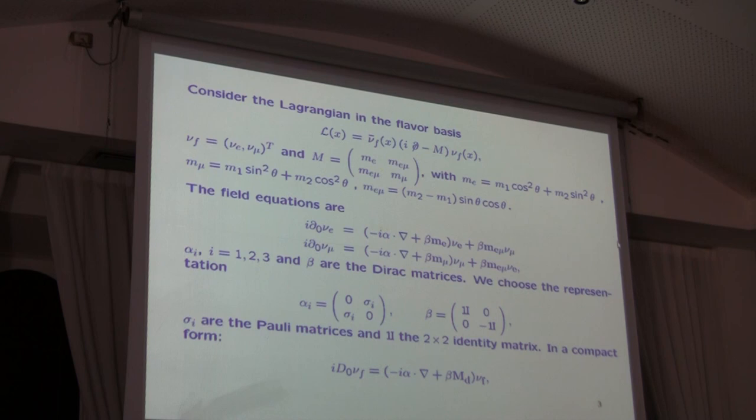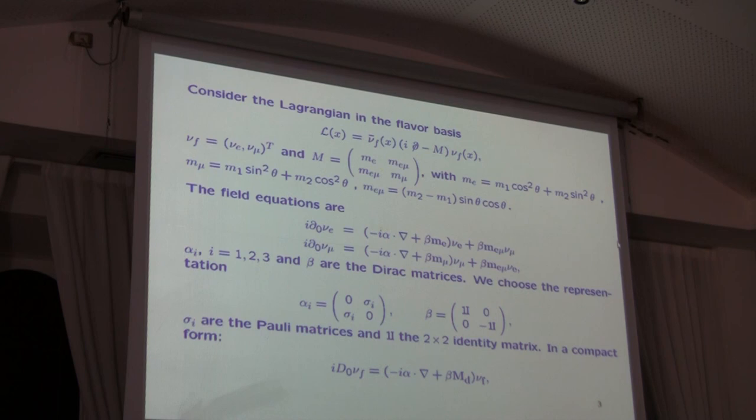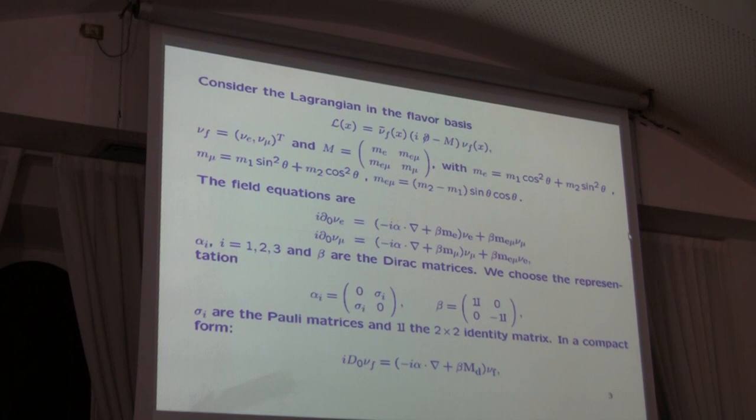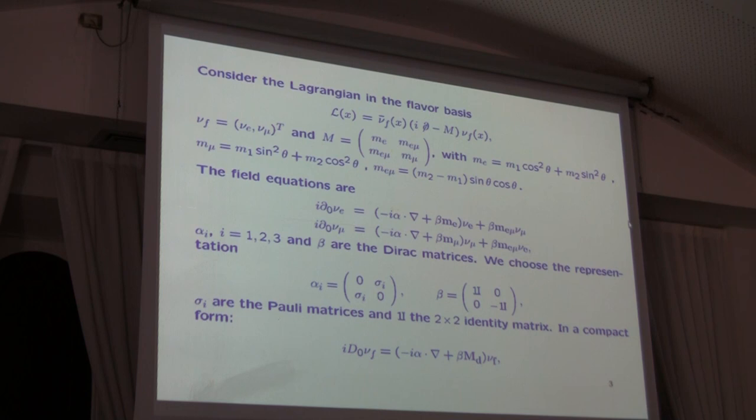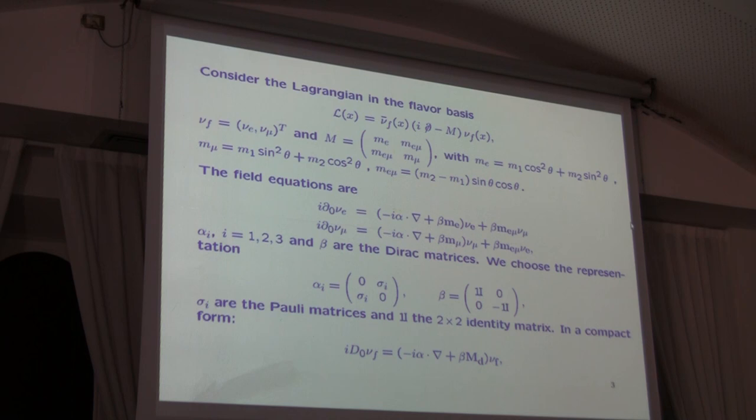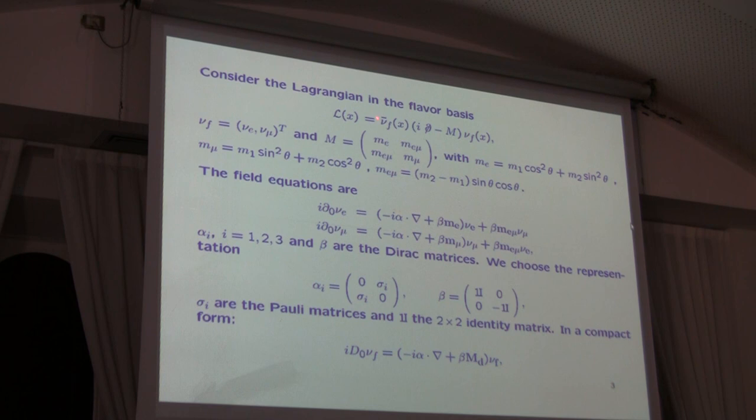You consider the Lagrangian in the flavor neutrinos basis, and everything is specified along this slide. M is this matrix, so you have also this M_nu. They are the usual standard objects when you start to consider neutrino mixing, so everything is complete. Except the fact that when you write the field equations derived in the traditional way from this Lagrangian, you get these two equations.